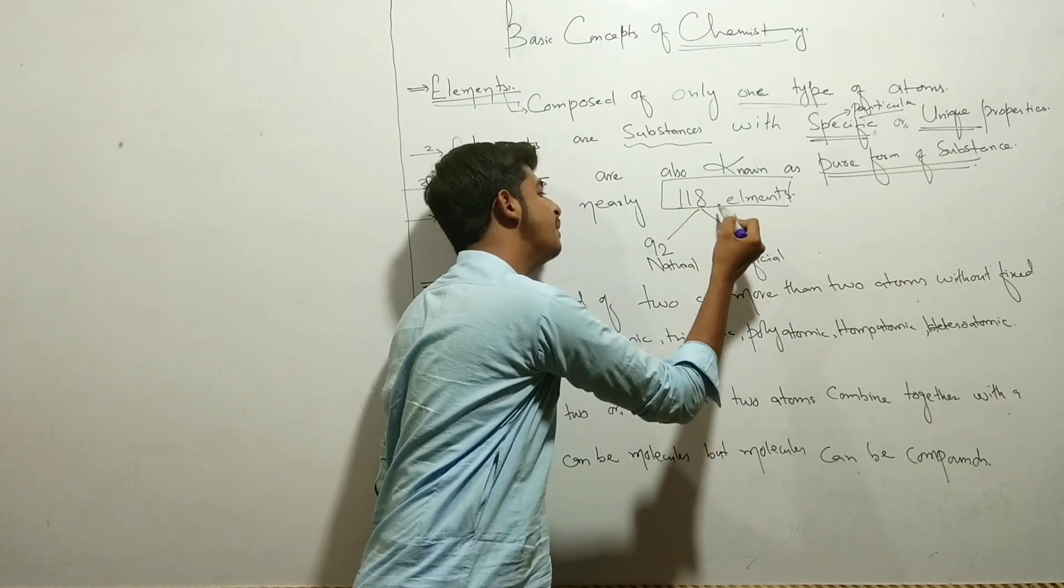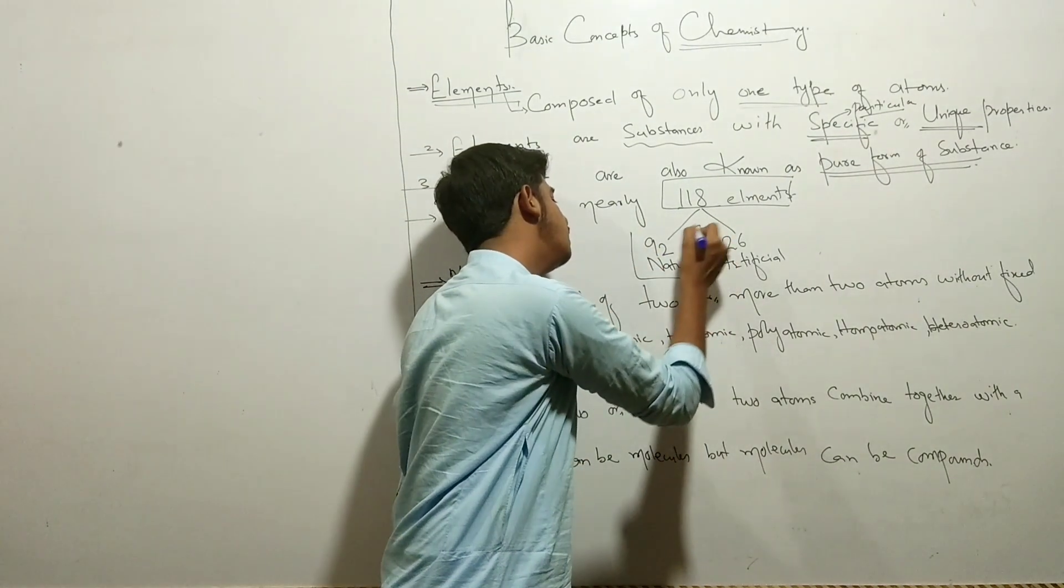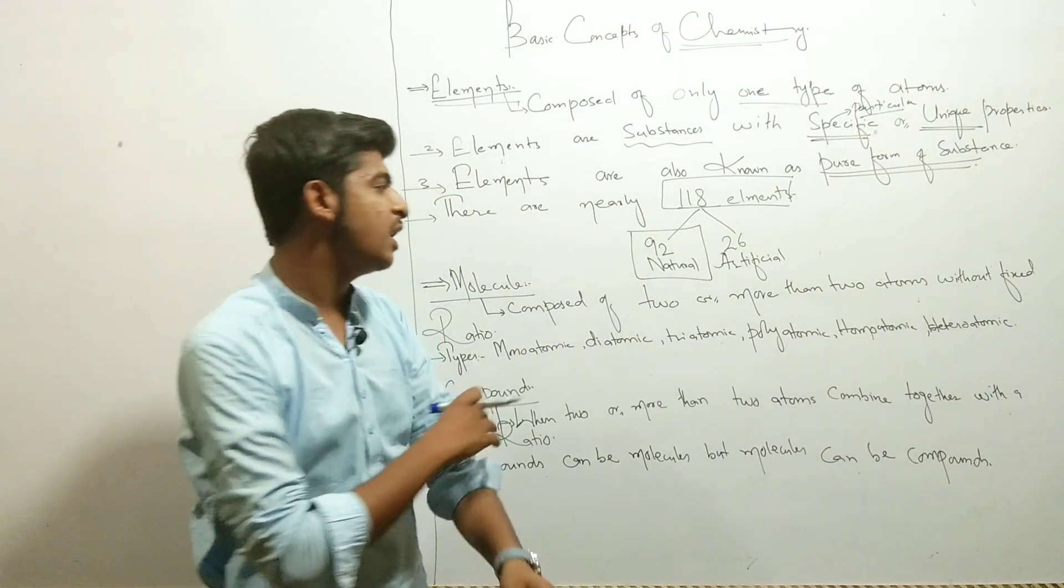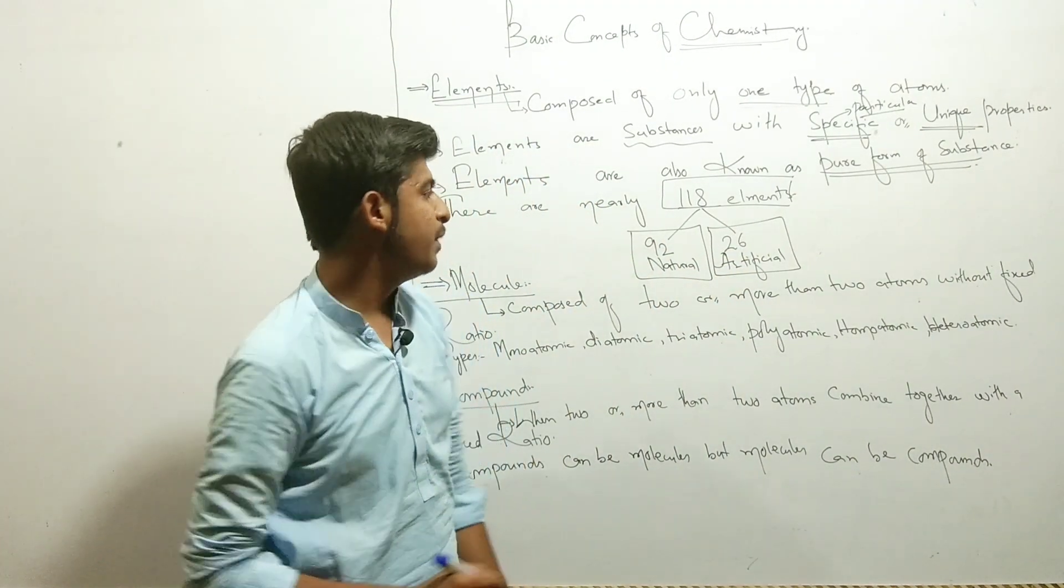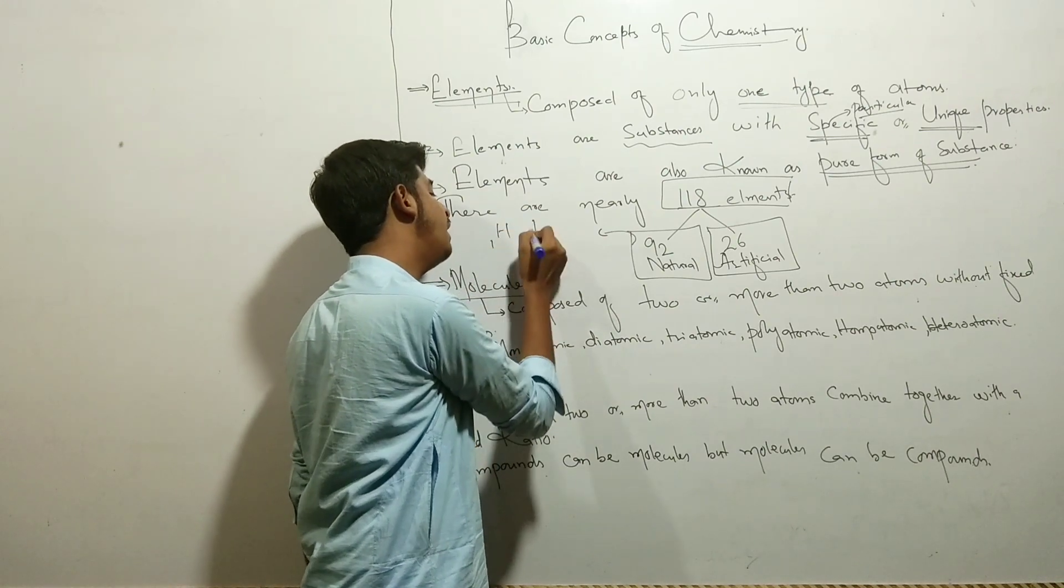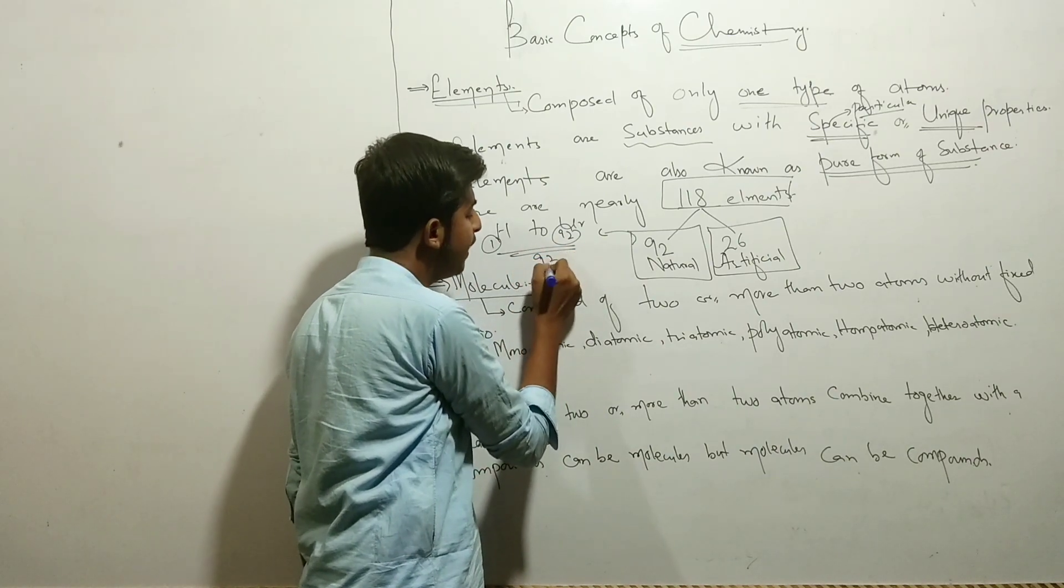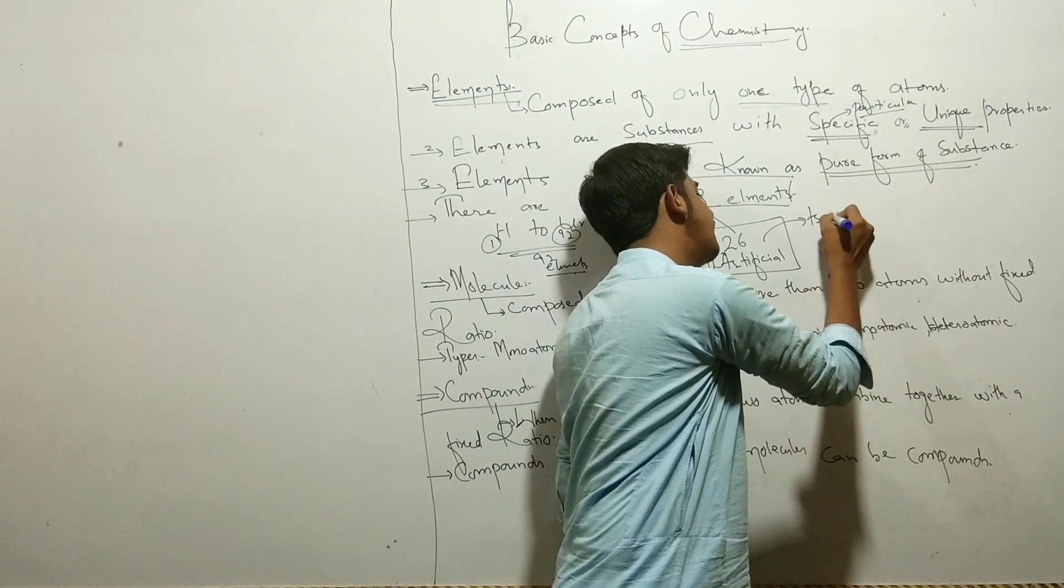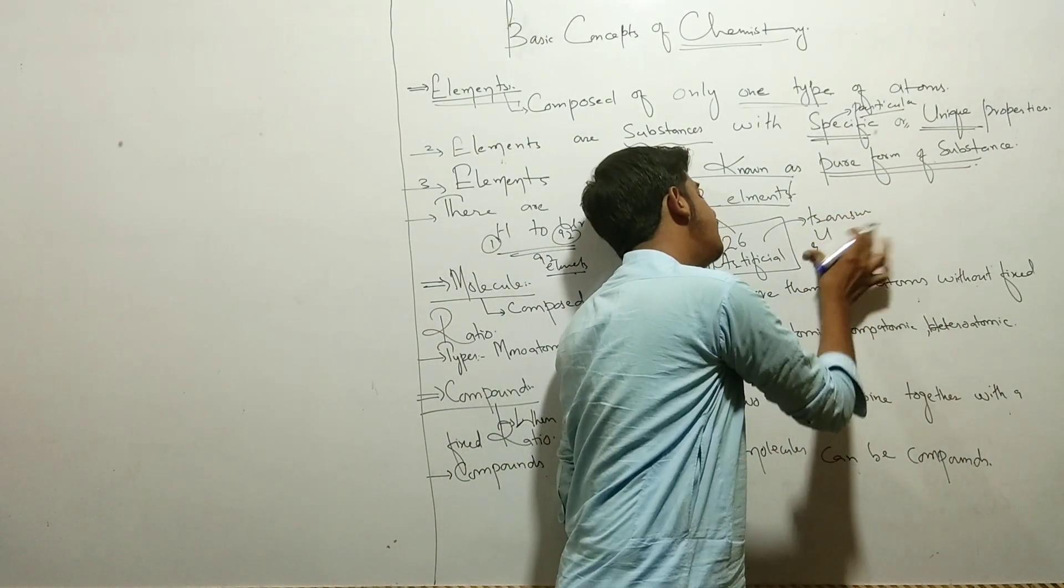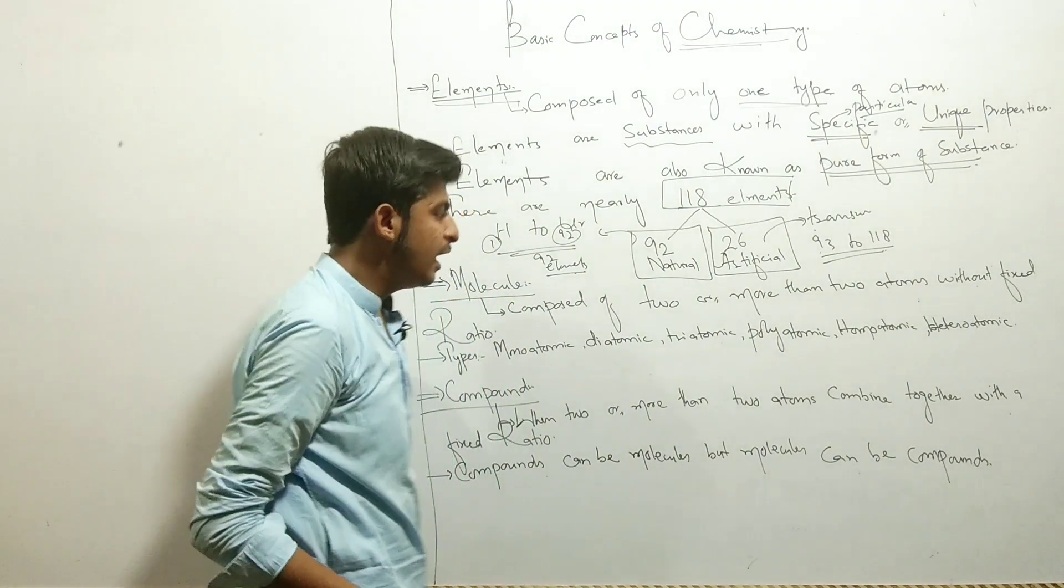There are 118 elements. If you are going to talk about the periodic table, periodic table may have 118 elements, from which 92 are natural and 26 are artificial. So here the question arises about 92 natural elements. We have elements which are natural. After uranium is known as trans-uranium, which means that we will start from 93 to 118.